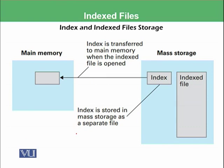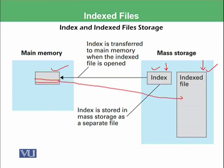So how is the index and indexed file storage maintained? In mass storage, you have the indexed file and you also have the index — which is the table shown in the previous slide. Whenever you want to retrieve a file, first you read the index and load it into main memory. Main memory then tells you which record is stored where, and you go to that particular location to get the information.